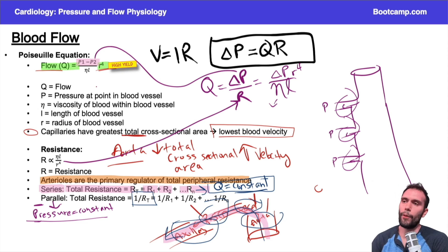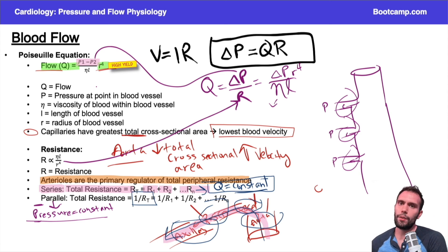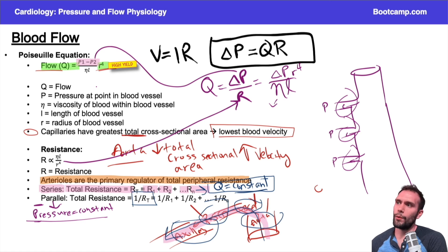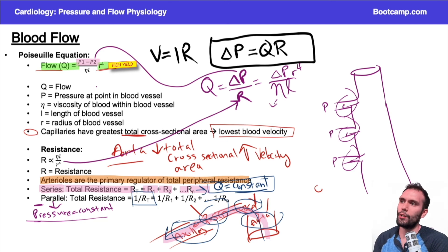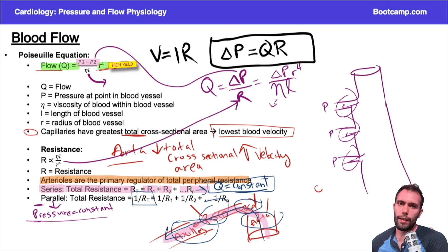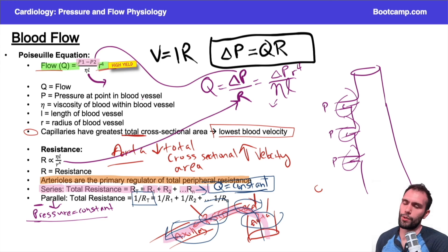Viscosity is essentially how thick the blood is. On board questions, this usually involves polycythemia or anemia. Polycythemia means higher hematocrit, higher viscosity, and therefore lower flow. Anemia means lower hematocrit, lower viscosity, and higher flow — think of it as the thickness of the blood. Additionally, vessel length is proportional to resistance: the longer the vessel, the more opportunity for blood to encounter resistance.